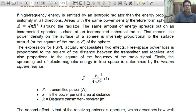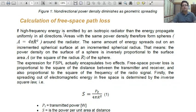Now, calculation of free path loss. If high frequency energy is emitted by an isotropic radiator. Isotropic radiator is that radiator which radiates energy uniformly in all directions. Then the energy propagates uniformly in all directions due to this isotropic radiator. Areas with the same power density therefore form spheres. If there is a source, then it radiates in a sphere in three dimension around the radiator.